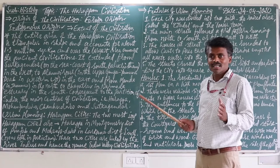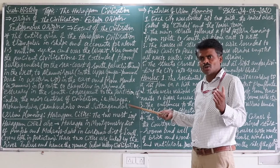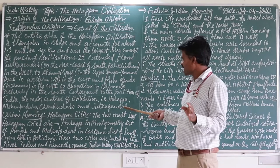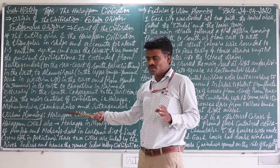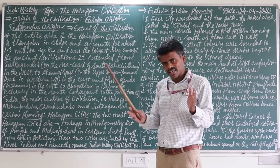Now you understand the extent of the civilization — from where to where it extended. This is an important question you need to know. The places are not easy to pronounce. Below-average students need to focus more. Look at the spellings of Harappa, Mohenjo-daro, Chanhu-daro, and Sukkur carefully. You understood two origins — foreign and indigenous — and the area the civilization covered.